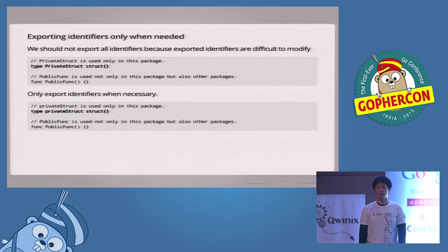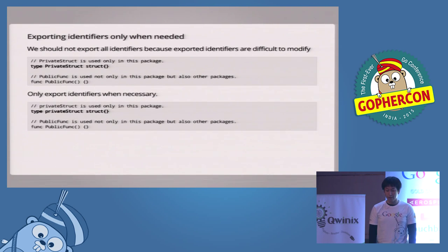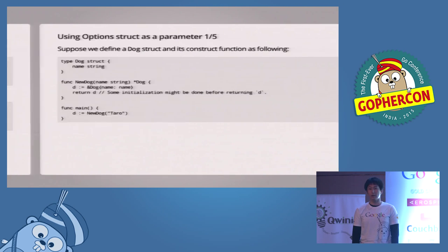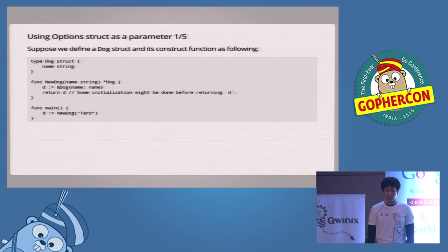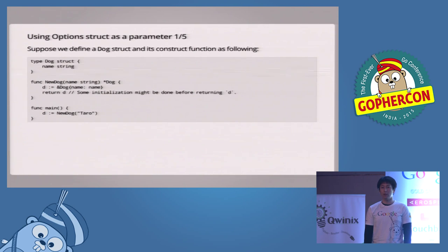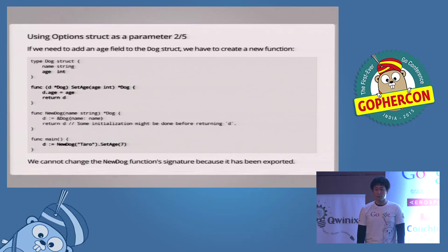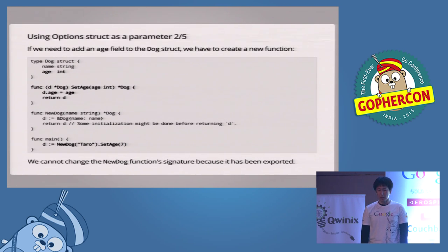Using option struct as a parameter is not a standard way, but it's a good way to make a Go package more extensible. Suppose we define a dog struct and its constructor function. The dog struct has a name field, and the new dog function takes a name string as a parameter, creates a dog instance, and returns it. In the main function, the new dog function is called to create a dog instance. Then suppose we need to add an age field to the dog struct. We want to add an age parameter to the new dog function, but we cannot because it has already been exported. If we change its signature, all of the other packages and programs that call this function need to be modified. So all we can do is create a SetAge method, and in the main function, we need to call two functions — new dog and set age — to initialize the dog instance.